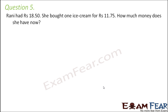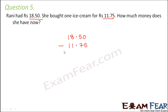Question number 5: Rani had rupees 18.50. She bought one ice cream for rupees 11.75. How much money does she have now? We calculate total minus the cost of ice cream: 18.50 minus 11.75. Starting from the rightmost column, we have 0 on top, so we borrow 1 — it becomes 10.